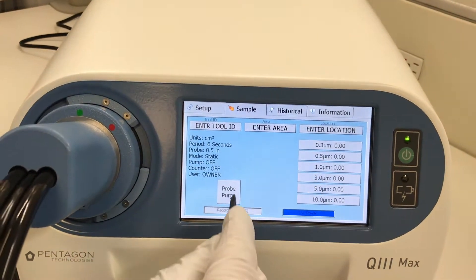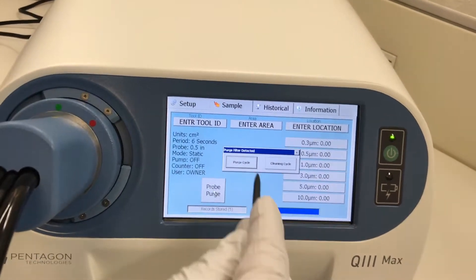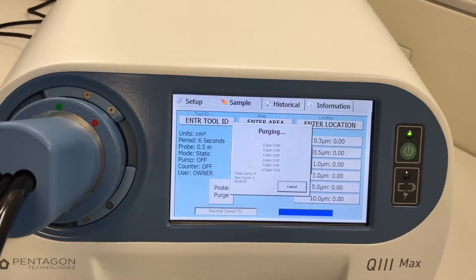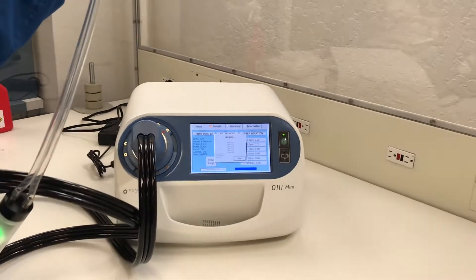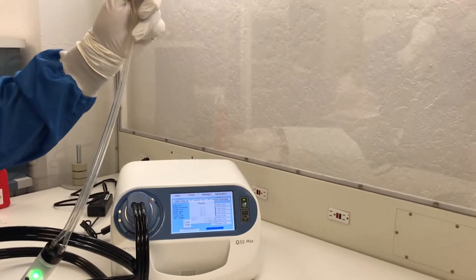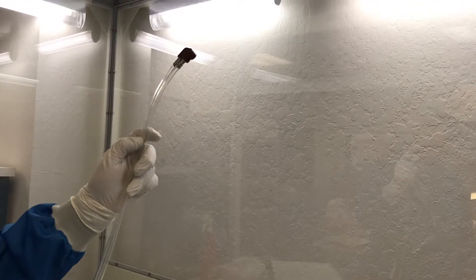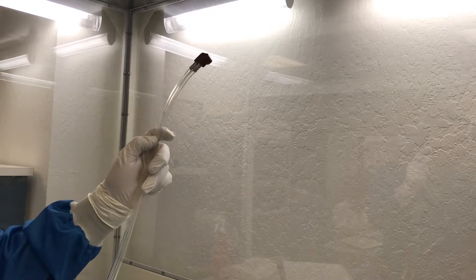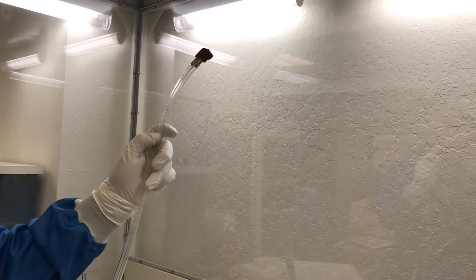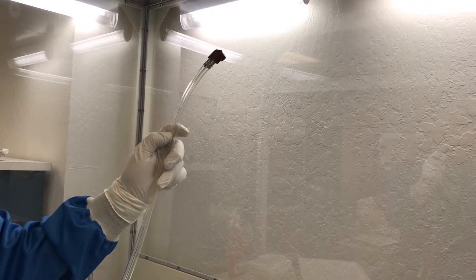Now we are on the sample page and we are going to purge the probe to ensure that the probe and system do not contribute any counts to our test results. The purge process measures the air above our part and continues to run until it gets five successive zero counts. Notice how the probe is held close to the clean air coming from the HEPA filters.